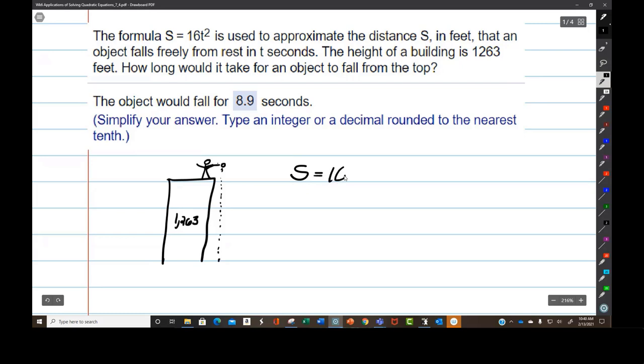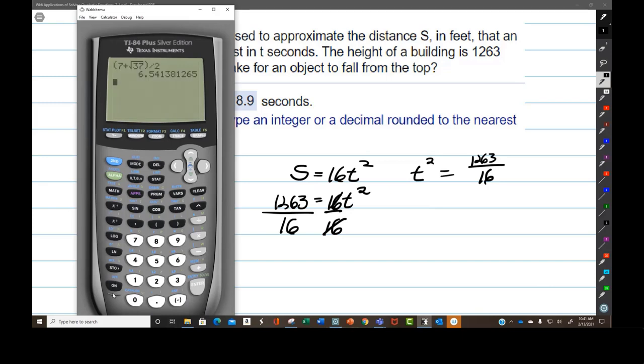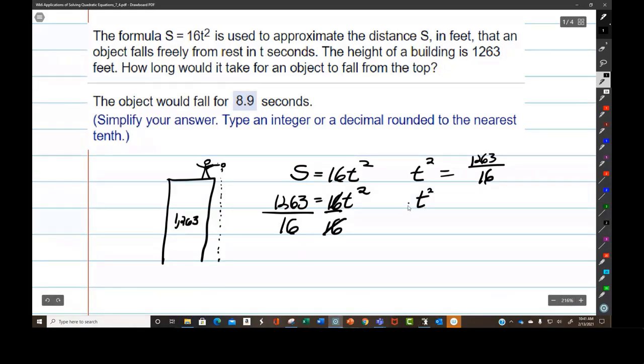We have S equals 16 t squared. That's 1,263 equals 16 t squared. We divide by 16. So we're going to have t squared equals 1,263 over 16. Now I doubt that goes evenly, but let's see. We are going to take the square root of both sides. Normally I would say plus or minus.